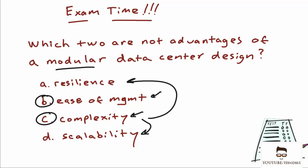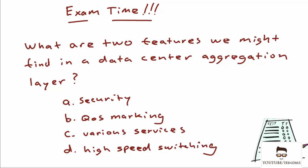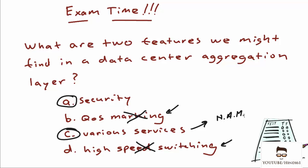Next question: what are two features we might find in the data center aggregation layer? Choose two from: security, QoS marking, various services, or high-speed switching. QoS is found at the aggregation layer, but marking specifically happens at the access layer. High-speed switching is more a description of the core layer. The best answers are access controls and security mechanisms at the aggregation layer, plus various other services — like network analysis modules for analyzing traffic coursing through the data center.